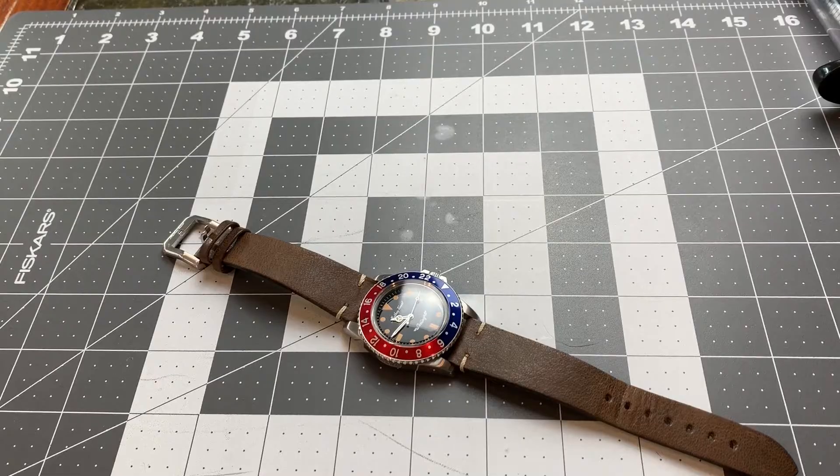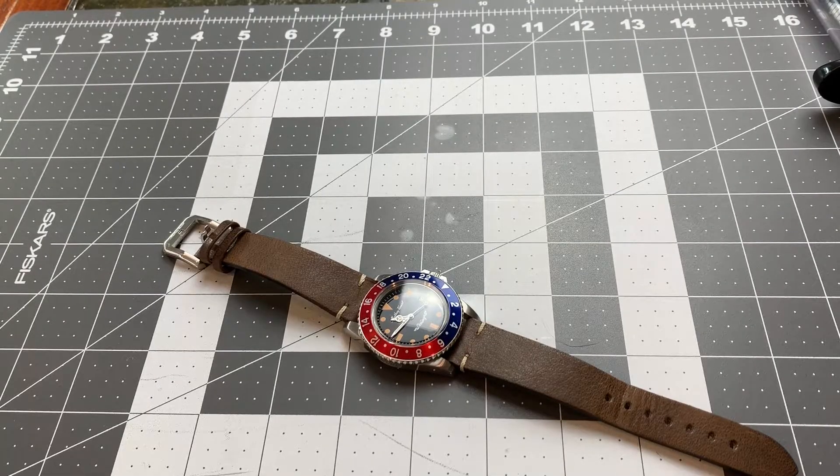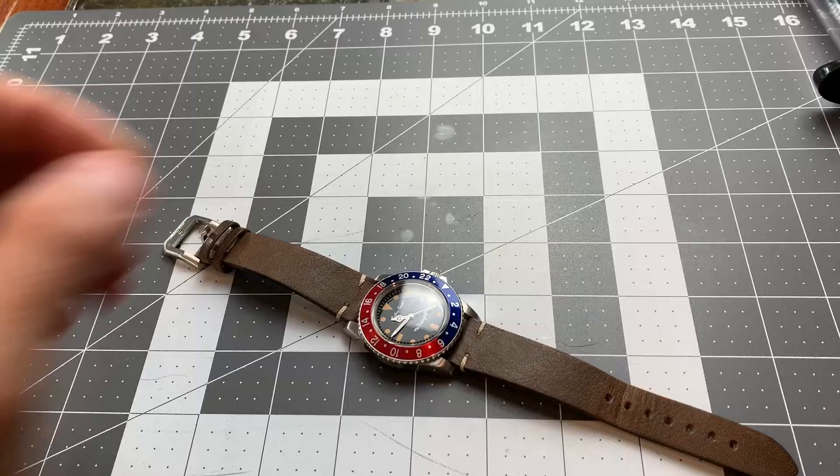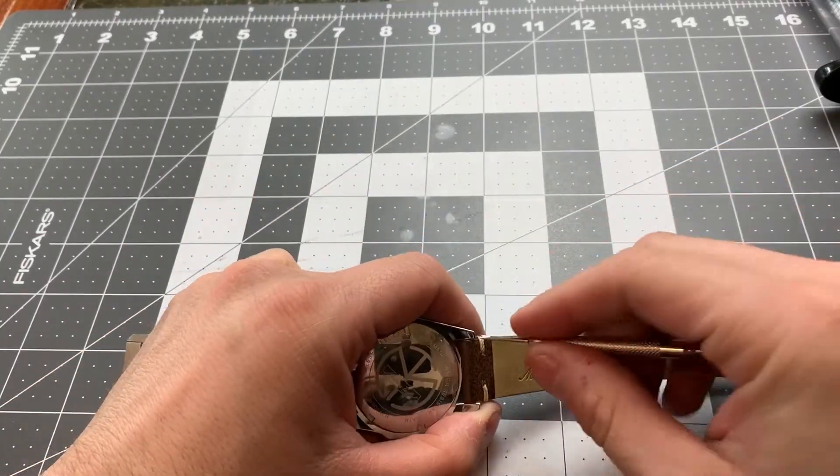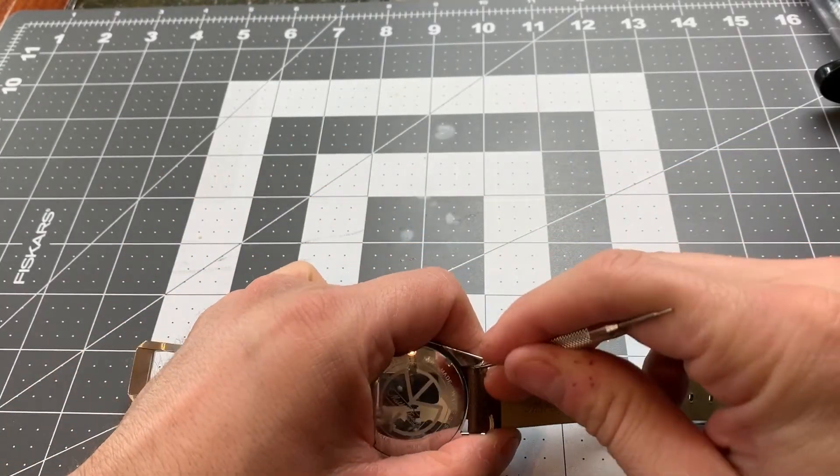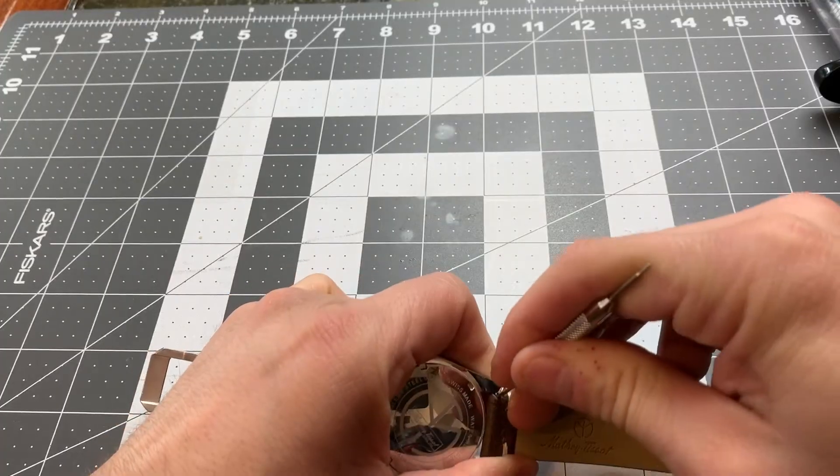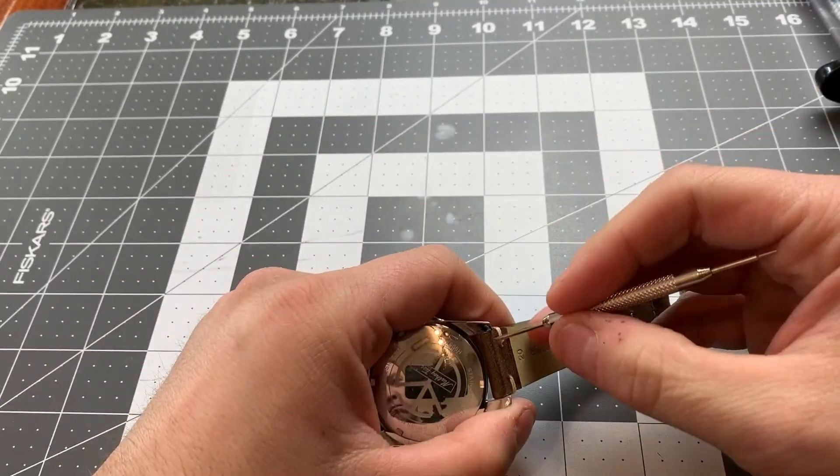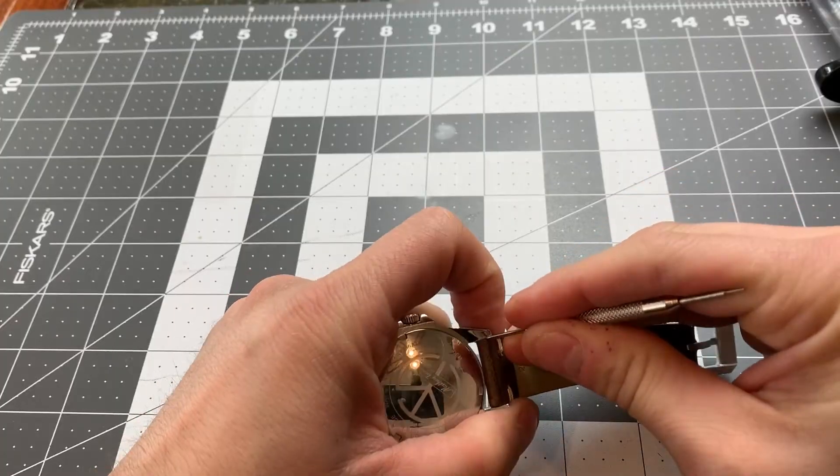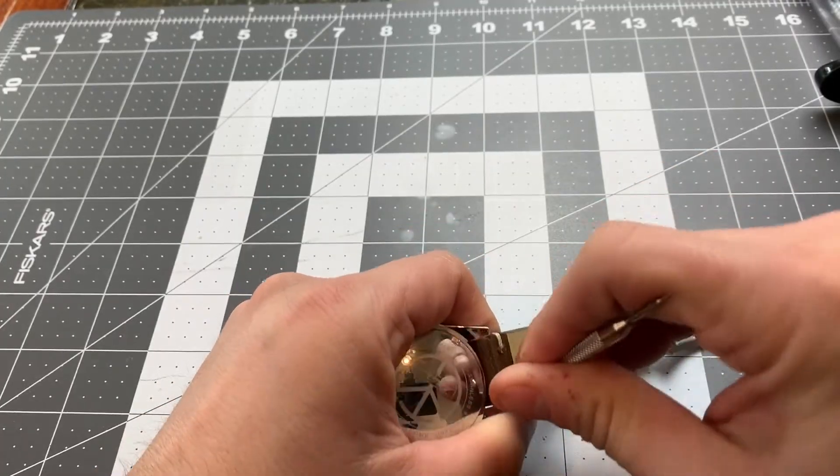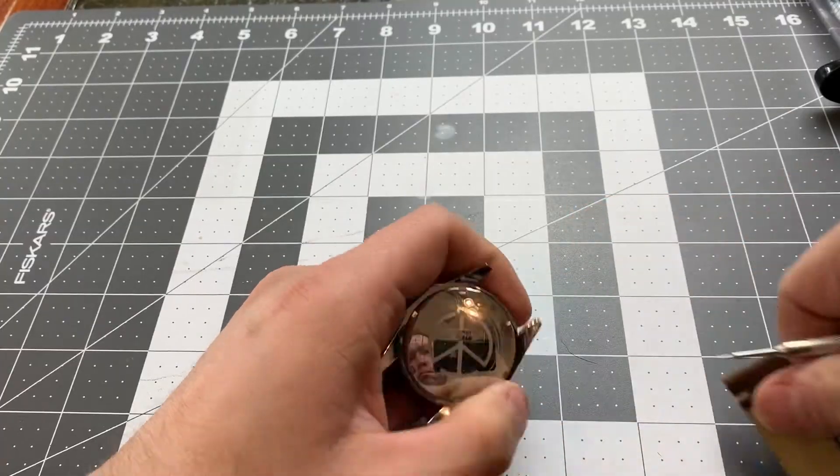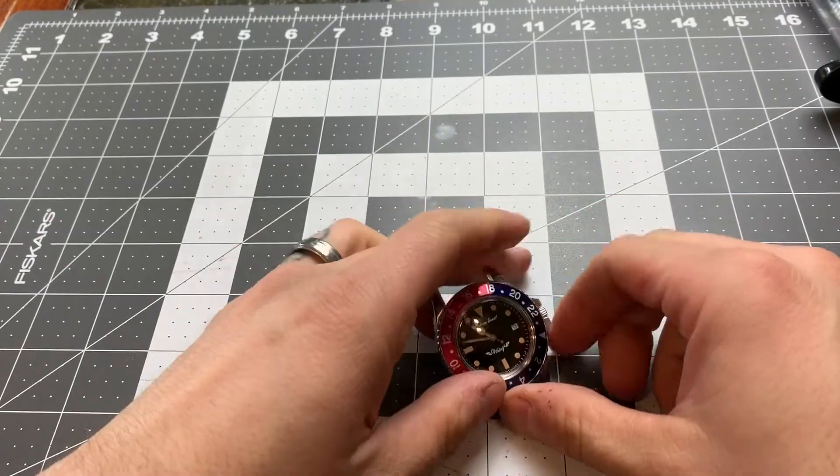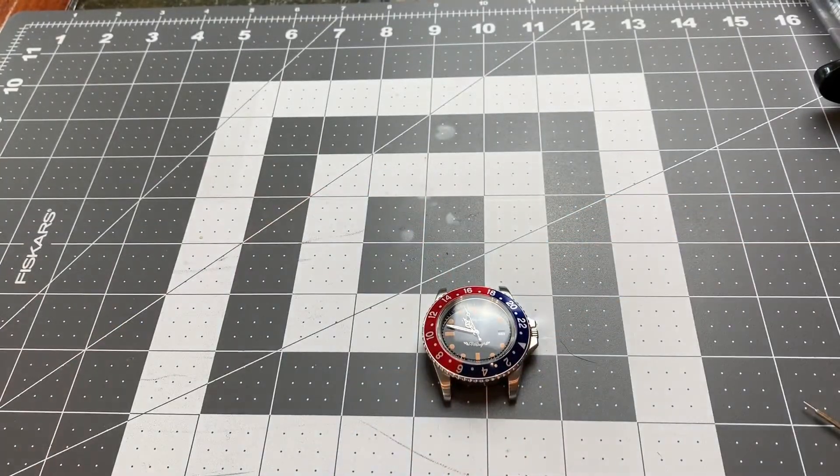The first thing that we're going to do is pull off the straps itself, because everything including the movement and the crown, the crown stem, all needs to come out of this watch. The first thing I did was take off the spring bars with a spring bar tool that came in the kit itself. This is extremely easy. You can also use a small screwdriver.